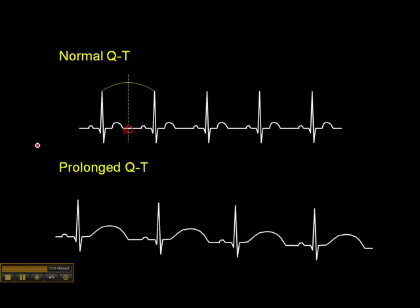A prolonged QT, on the other hand, is one where the QT interval ends beyond the halfway mark between the two R waves. This can happen with either a narrow QRS or a wide QRS.